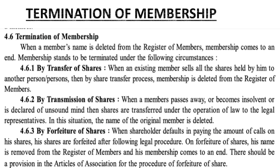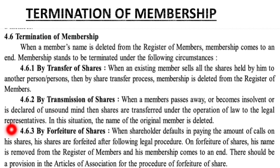The first method is transfer of shares. The second method is by transmission of shares. Transmission of shares means that if a person, for example person A, becomes insolvent or is declared of unsound mind, then automatically by operation of law the shares are transferred to the legal representative. That is what transmission of shares means.